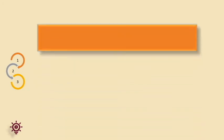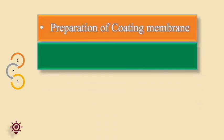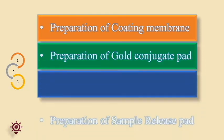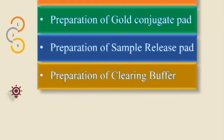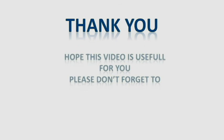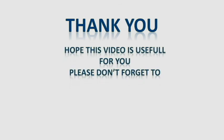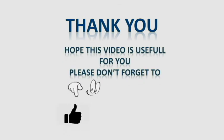Finally, we learned the entire process of malaria antigen test manufacturing. As a summary, we understood the preparation of coating membrane, preparation of gold conjugate pad, preparation of sample release pad, and preparation of clearing buffer. Thank you. Hope this video is useful for you. For many more recipe steps in different products and regulatory aspects, please like, share, and subscribe for upcoming videos.